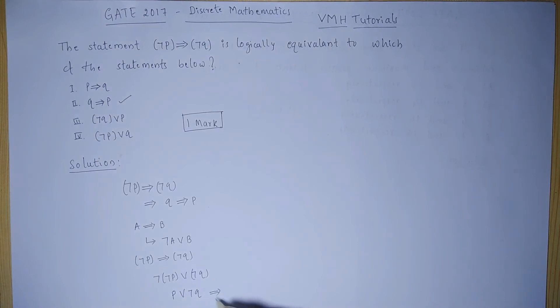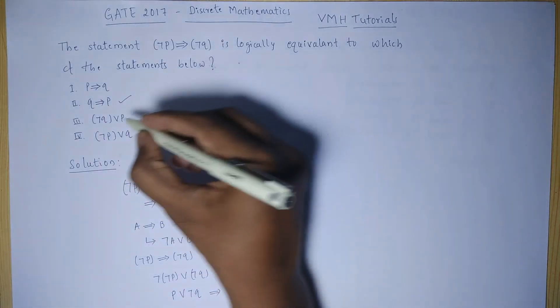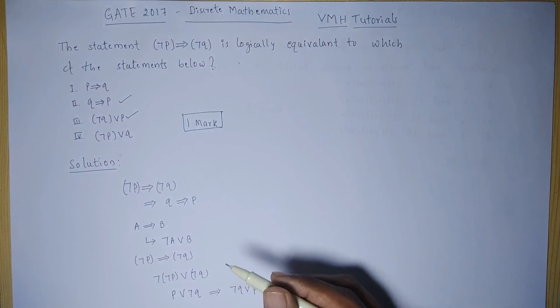From commutative law, we know that negation of Q or P, it can be written like negation of P or Q. So, the given statement is equivalent to the third statement also.